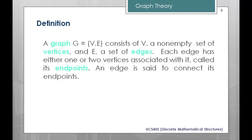First, what is a graph? A graph is denoted by G. It consists of two things: V and E. Here, V is the non-empty set of vertices, and E is the set of edges. So overall, a graph is the combination of two things: vertices and edges.